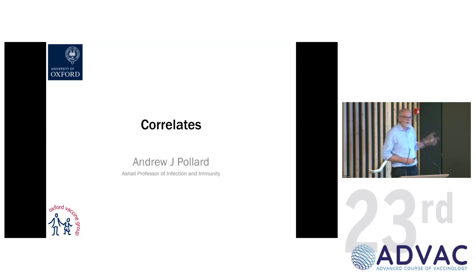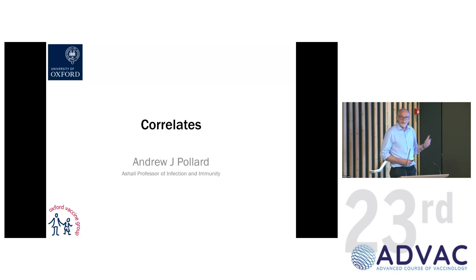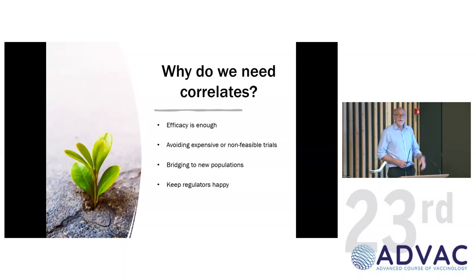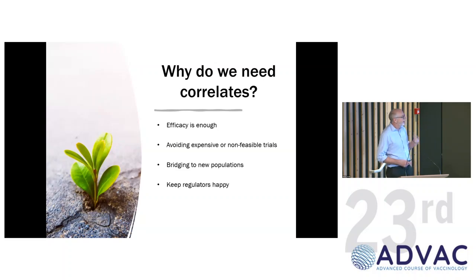We need to move to a point where immunology is driving vaccine development. One important thing is that we can use the immune response to work out mechanisms of protection once we've made a vaccine, and perhaps persuade regulators that these are important and can avoid very large trials. If you can show efficacy for your vaccine, that's enough to get licensed. But if you can find correlates — immune measures that relate to protection — you can avoid doing lots of bridging studies. You can just tell the regulator you've got the right level of antibody, so we know the vaccine will work. Correlates can be very useful to avoid very large trials to bridge new populations.